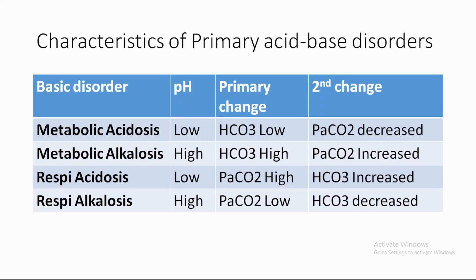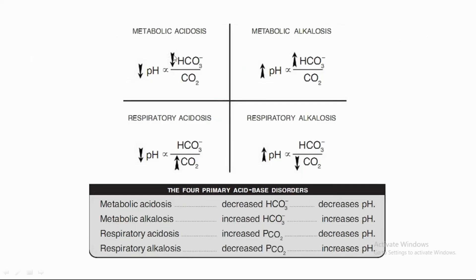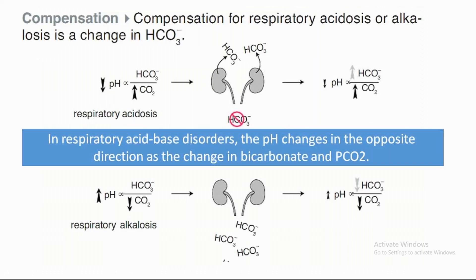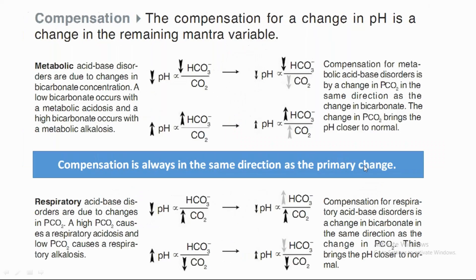Compensation is always in the same direction as the primary change. Metabolic acid-base disorders are due to changes in bicarbonate concentration — low bicarbonate in metabolic acidosis and high in alkalosis. Compensation of metabolic acid-base disorders occurs through a change in partial pressure of carbon dioxide in the same direction as the change in bicarbonate, bringing pH closer to normal.